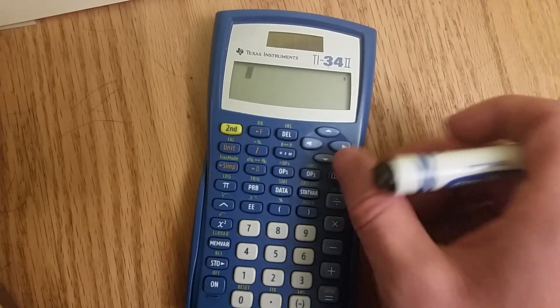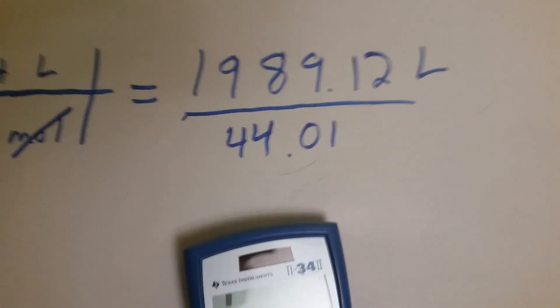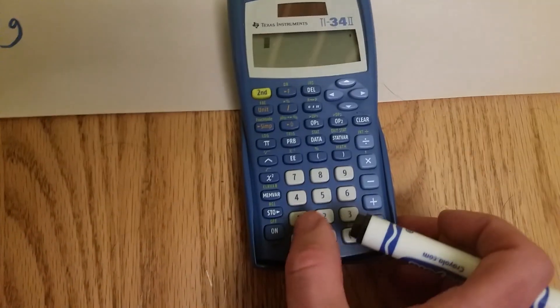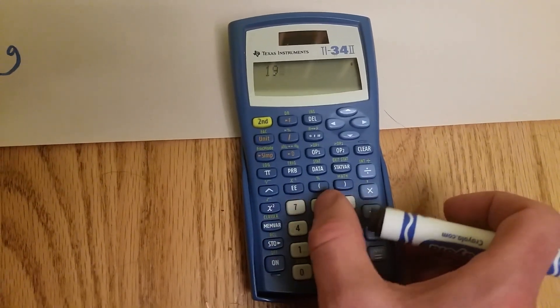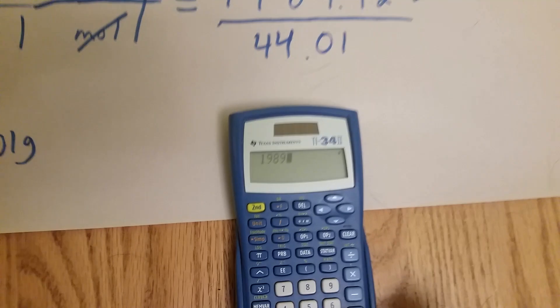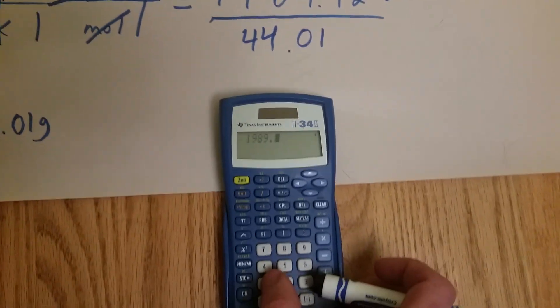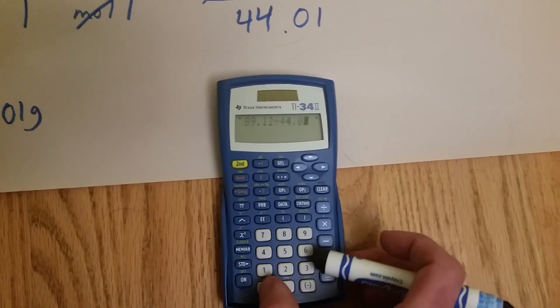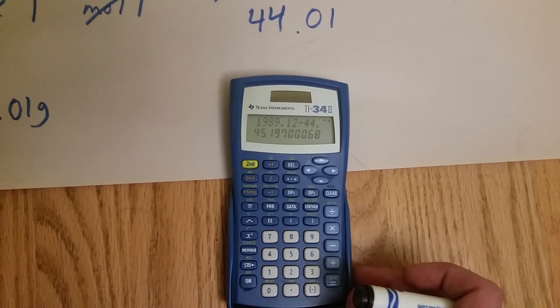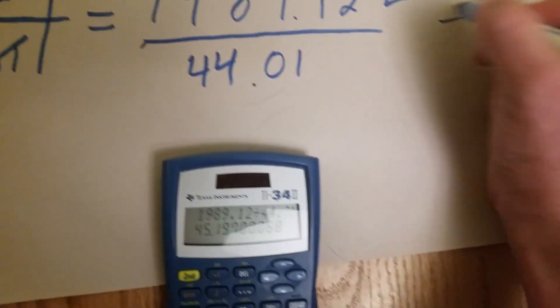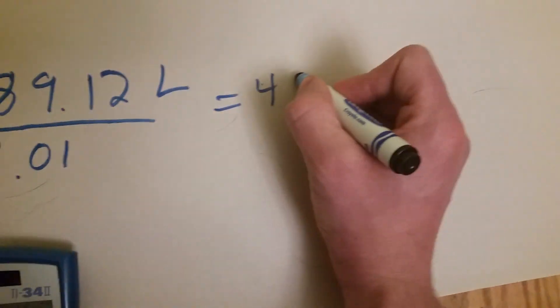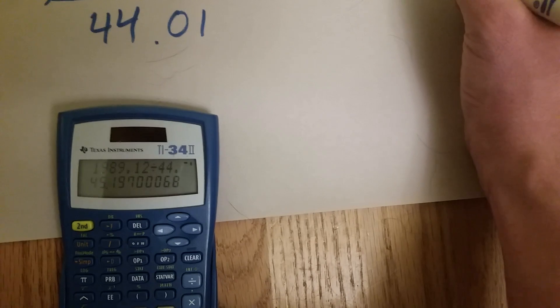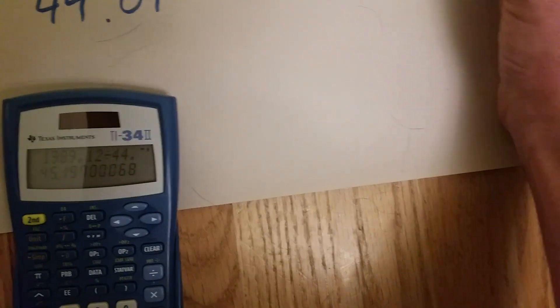Here, let me clear. And we'll go 1989.12 divided by 44.01. And we get 45.197.